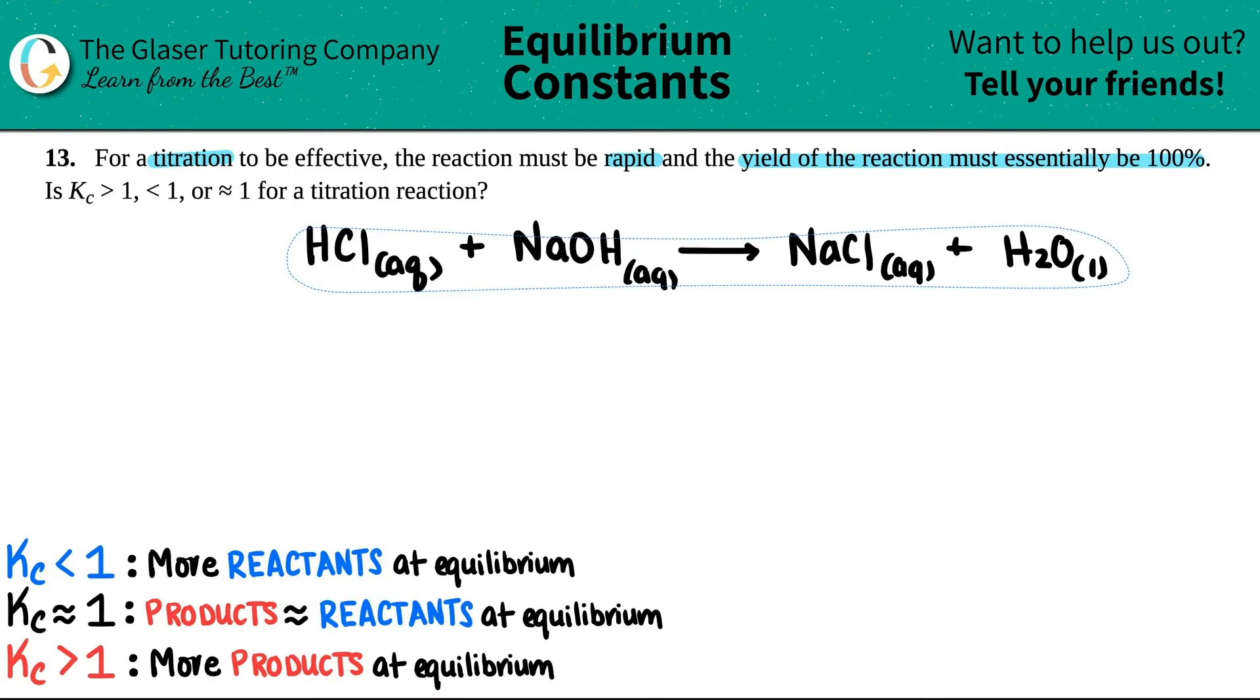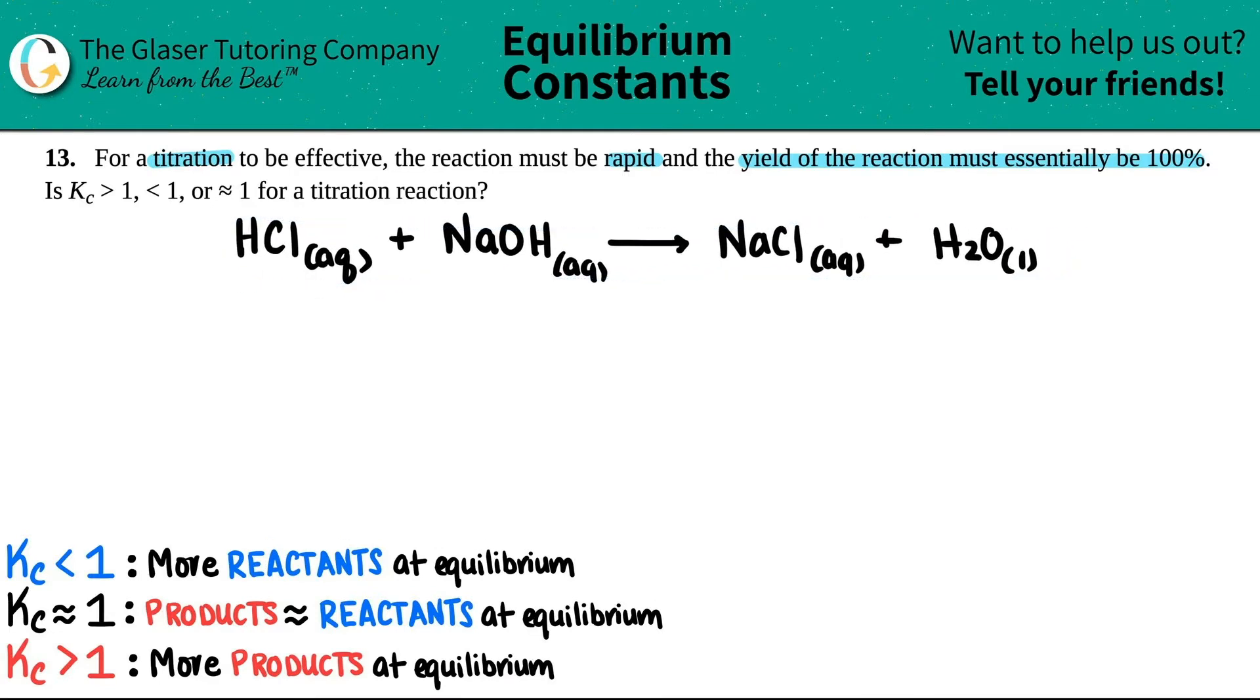Okay. So they're saying in order for a titration to work or be effective, the reaction must be super quick, must be rapid. And the yield must be essentially 100%. The yield means what you produce. In this case, in a titration reaction, you produce the yield. The yield is the products. They're saying that it has to be essentially 100%.